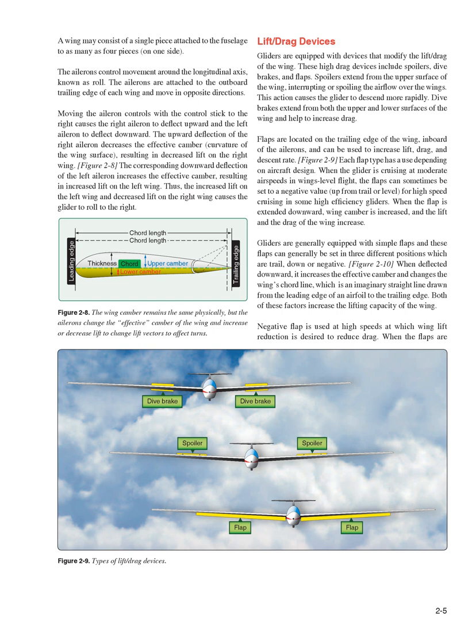Lift/drag devices: gliders are equipped with devices that modify the lift/drag of the wing. These high-drag devices include spoilers, dive brakes, and flaps. Spoilers extend from the upper surface of the wing, interrupting or spoiling the airflow over the wings. This action causes the glider to descend more rapidly. Dive brakes extend from both the upper and lower surfaces of the wing and help to increase drag. Flaps are located on the trailing edge of the wing, inboard of the ailerons, and can be used to increase lift, drag, and descent rate.